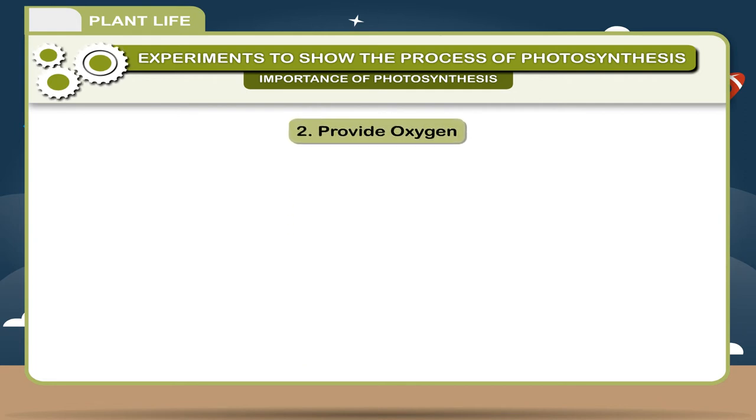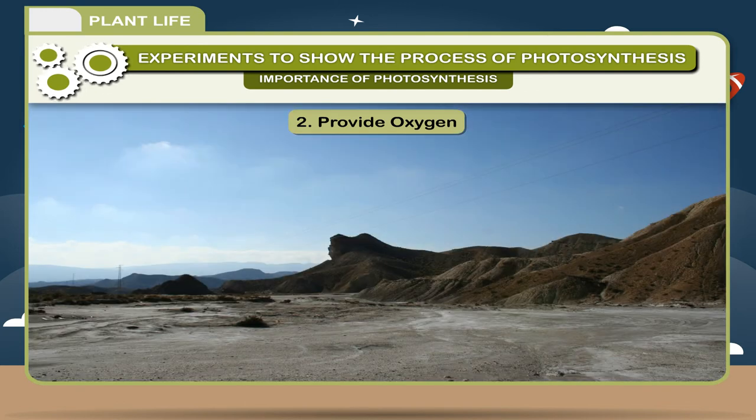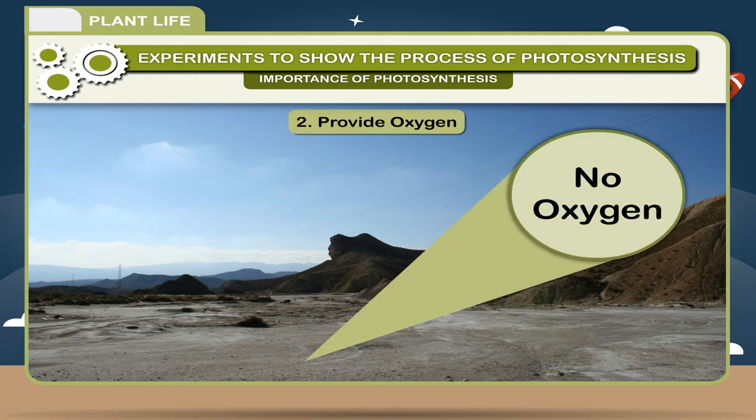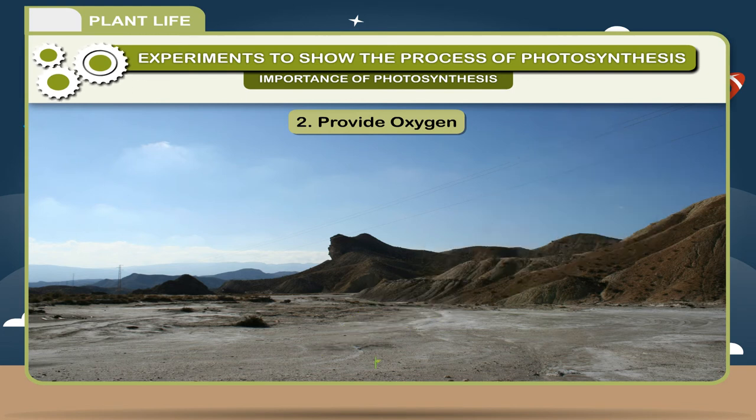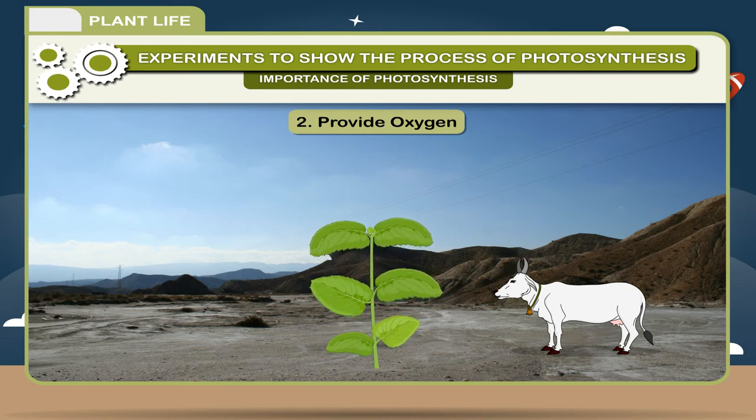2. Provide oxygen. The life-supporting gas, oxygen, is present in the atmosphere in a free state only because of photosynthesis. Scientists strongly believe that about 2 billion years ago when there was no life on the earth in any form, there was no free oxygen in the atmosphere. Appearance of green plants set the stage for the animals to appear. Almost all organisms need oxygen for respiration.